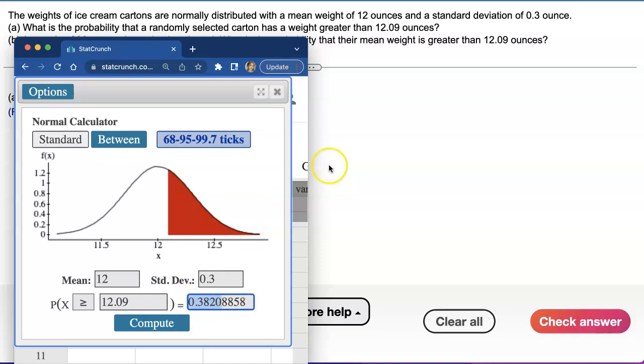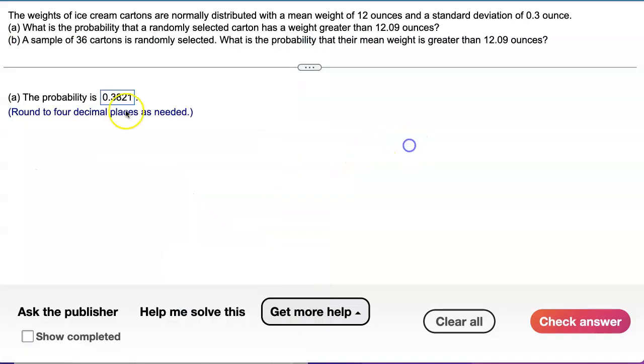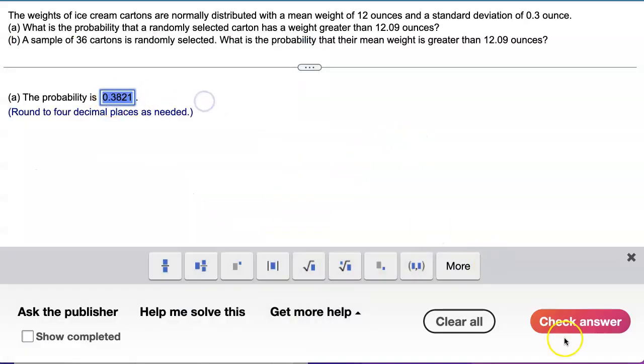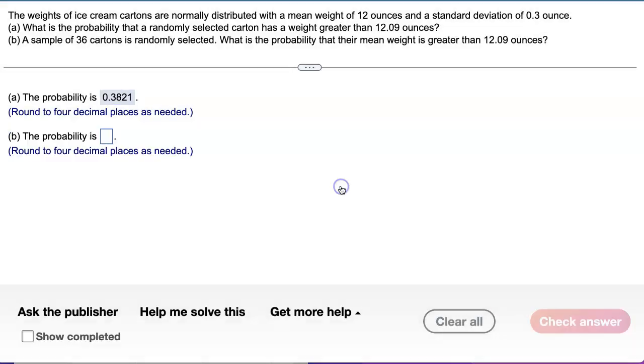What about the second one? We have a sample of 36 cartons. Now we're talking about sampling distribution of sample mean. So imagine going out and buying 36 ice creams, okay?